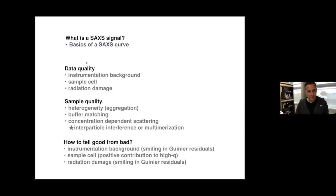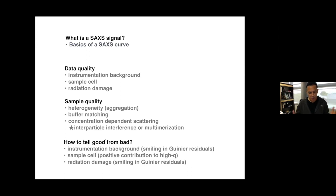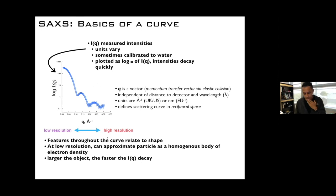What is the SAXS signal? It's the basics of how we describe a curve. We'll cover things that contribute to data quality, sample quality, and when you start processing your curve you really want to know if it's good for structural modeling — what kind of information can I get out of it, or should I go back and recollect data?